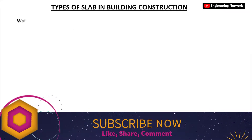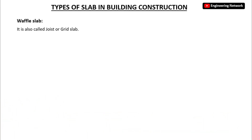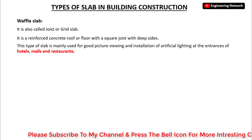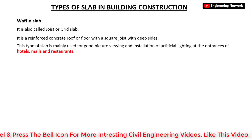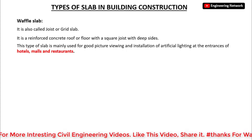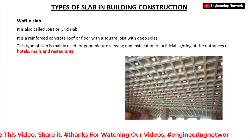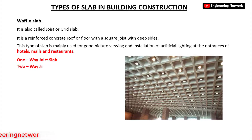The next type is the waffle slab, also called a joist or grid slab. It is a reinforced concrete roof or floor with a square joist with deep sides. This type of slab is mainly used for good aesthetics, picture viewing, and installation of artificial lighting at the entrance of hotels, malls, and restaurants, as you can see on your screen. Waffle slabs are also divided into one-way joist slab and two-way joist slab.